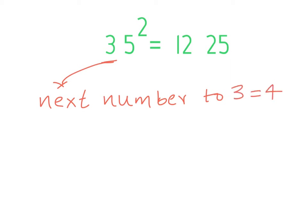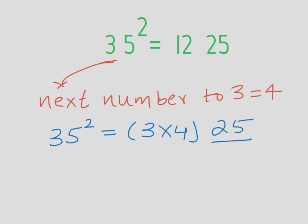So the next number to 3 is 4. Exactly. So what we do is that we will write 35 square is equal to 3 times 4 and put 25 at the end. We will place it above a blank.